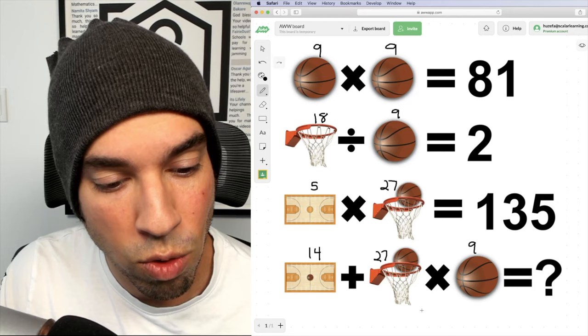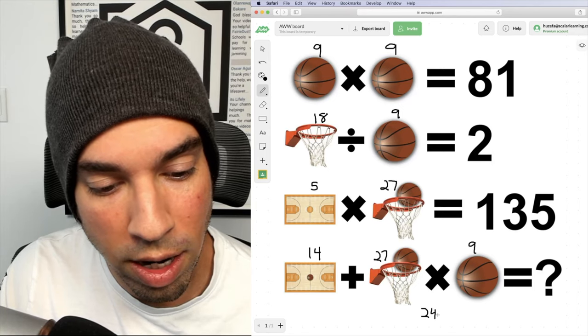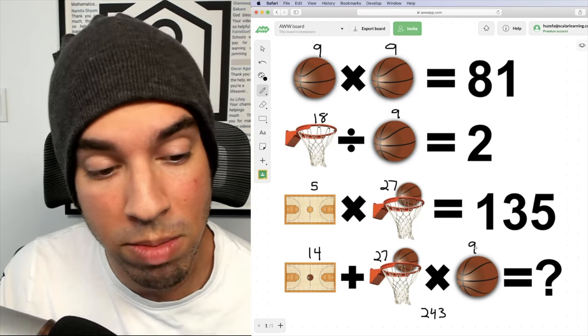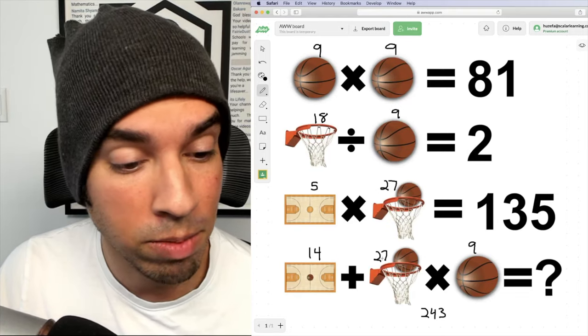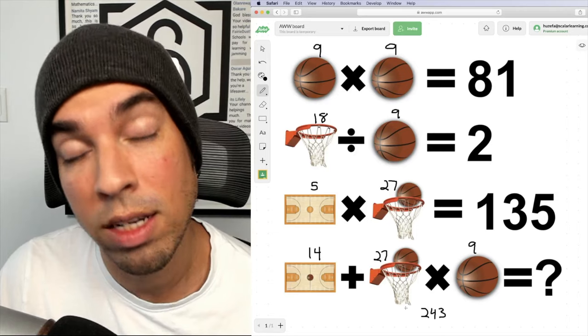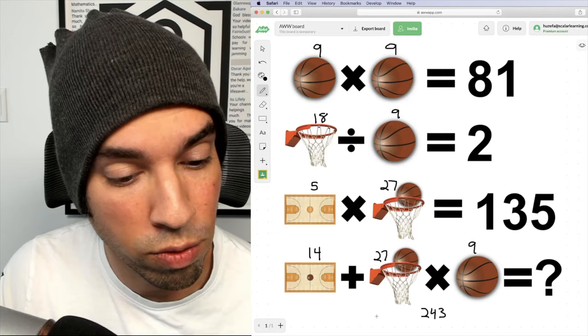And nine times 27 is of course 243. If you want to write that out, you can. But the way I like to do it mentally, nine times 20 is 180, nine times seven is 63. 63 plus 180 is a little easier to do in your head. That's 243.